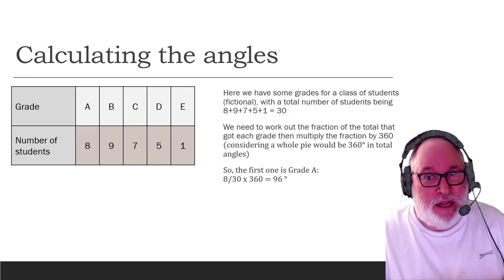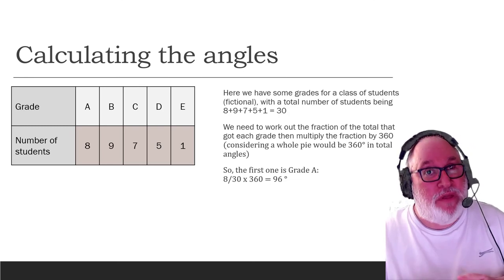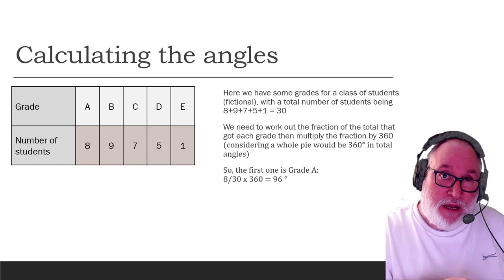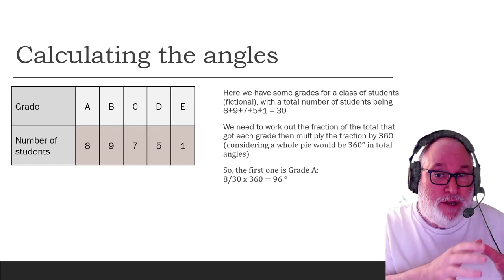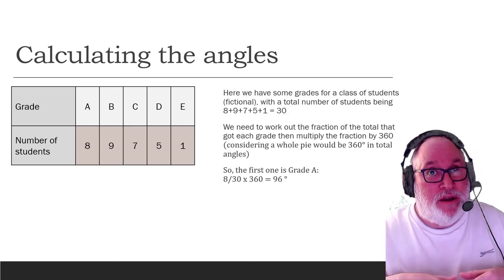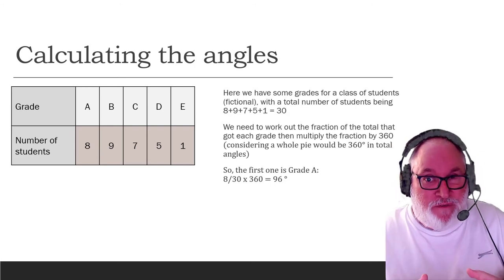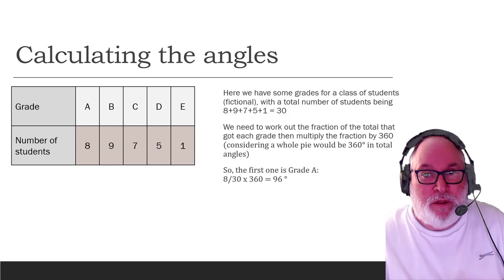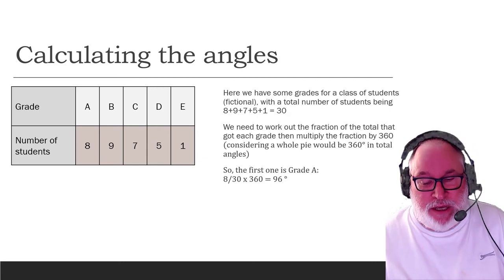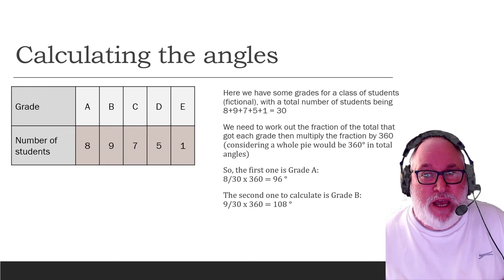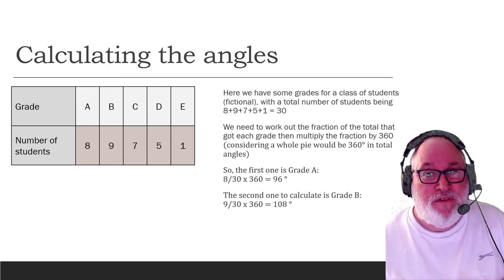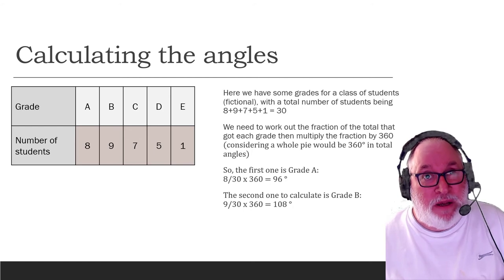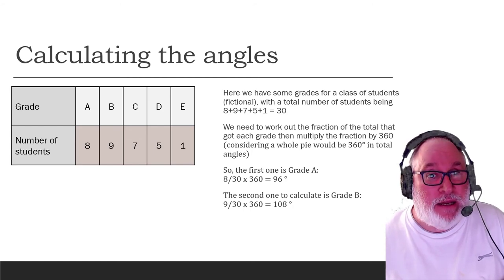So it's eight over 30, multiply by 360. What we did the last time was divide by 360. Because we did it the reverse, we had the pie chart. Now we're trying to make the pie chart. So that would make us 96 degrees. The second one is Grade B, that's nine, nine out of 30, multiply by 360, gives us 108 degrees. The third one is C, which is seven out of 30, multiply by 360, gives us 84 degrees. And so on.